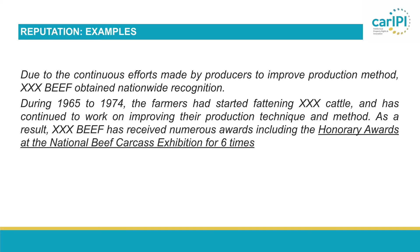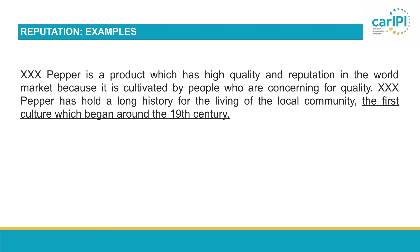Here are some examples of reputation. One description indicates that a certain beef has received numerous awards, including the honorary award at the National Beef Carcass Exhibition six times. This is a reference to a specific award at a national competition received six times — certainly an indication of reputation. Another example says a certain paper has held a long history for the living of the local community, with the first culture beginning around the 19th century. In this example, there is no proof of current reputation, so this description will not be considered sufficient.